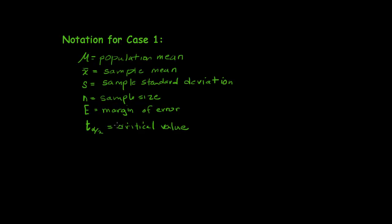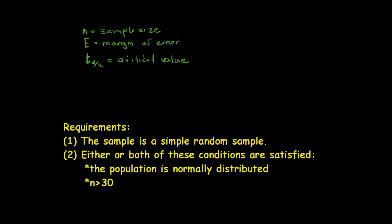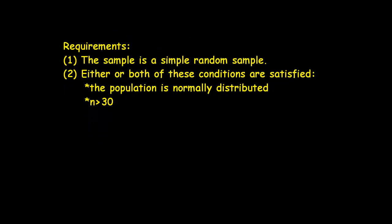So this is the notation we need to understand for computing and calculating a confidence interval estimate of the population mean when we do not know sigma, which is the much more common situation. So the requirements for doing this, that we have a simple random sample, and either or both of these conditions are satisfied: we start with a normally distributed population, or the sample size is greater than 30, or both.